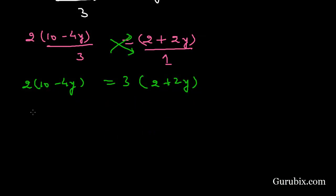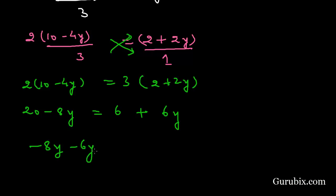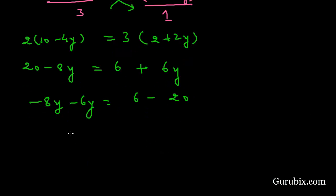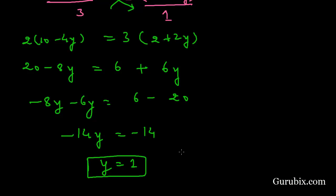Cross multiplying: 2(10 - 4y) = 3(2 + 2y), giving 20 - 8y = 6 + 6y. Rearranging: -8y - 6y = 6 - 20, so -14y = -14, which means y = 1.